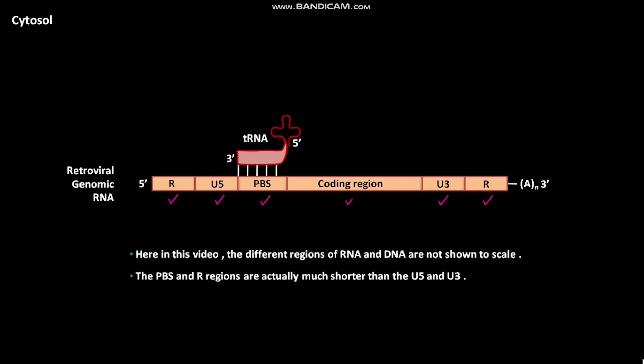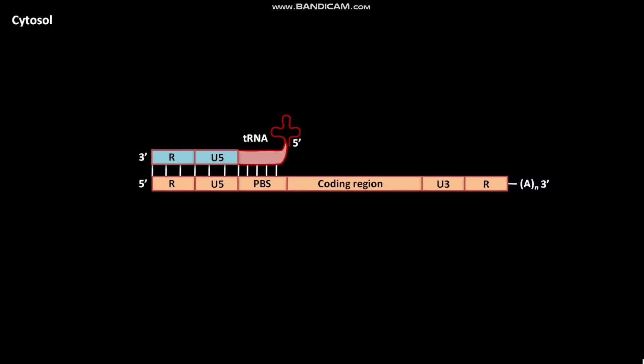During retroviral reverse transcription, first of all, tRNA is extended to form DNA copy of the 5' end of retroviral genomic RNA. As a result, DNA-RNA hybrid is formed.